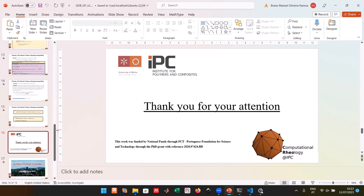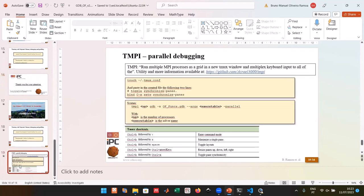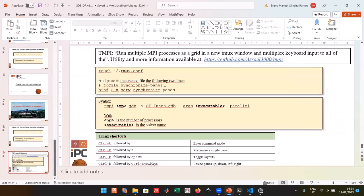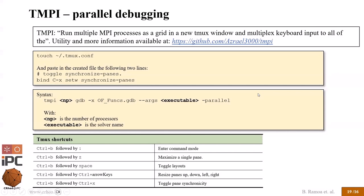For parallel debugging, I use a utility called tmpi which launches multiple terminal windows, attaches a GDB process to each one, and allows you to debug window by window. It synchronizes your keyboard input so a command typed in one window is sent to all others, and you can break the synchronization to work on individual processes.